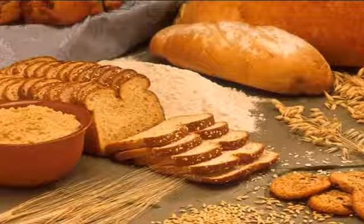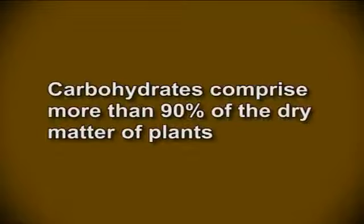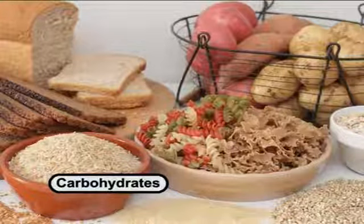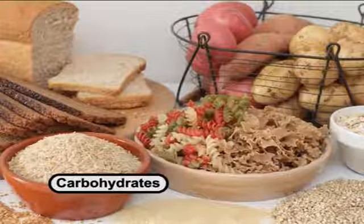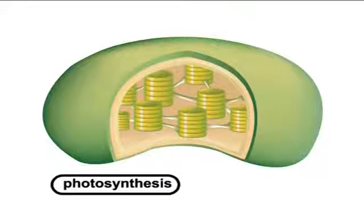In today's lecture, let's make an attempt to know about carbohydrates. Carbohydrates are the most widely distributed and abundant organic compounds on earth, comprising more than 90% of the dry matter of plants. They occur as both natural components as well as added ingredients in foods we eat. Carbohydrate biosynthesis in plants starts from carbon dioxide and water with the help of light energy, which is known as photosynthesis.